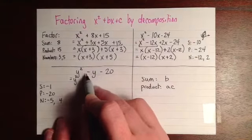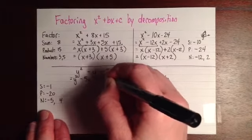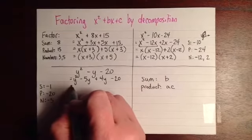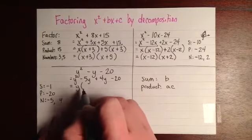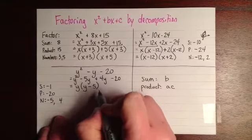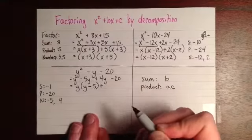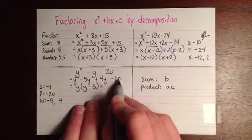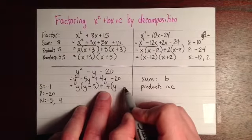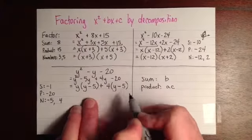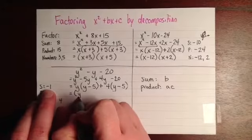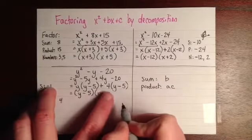So here, y squared, and I'll rewrite my minus y as minus 5y plus 4y, and then minus 20. And now I'll take a common factor out of my first two terms. So they both have a factor of y. So it's going to be y times y to get y squared, and y times negative 5 to get negative 5y. And then here I'll remember my plus sign or minus sign if we have a minus. And then here the common factor, in fact they both have a common factor of 4. So it'll be 4 times y to get 4y, and then 4 times negative 5 to get negative 20. So that worked out perfectly. Those are both exactly the same. So I have y minus 5 times y plus 4.